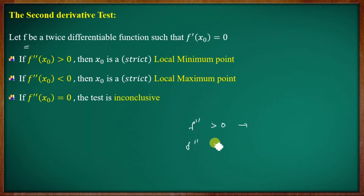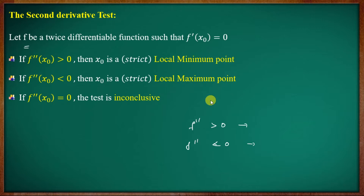The rule is: f double dash greater than zero corresponds to local minimum, f double dash less than zero corresponds to local maximum, and f double dash equal to zero is inconclusive.